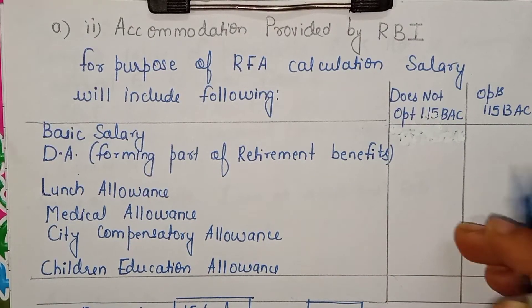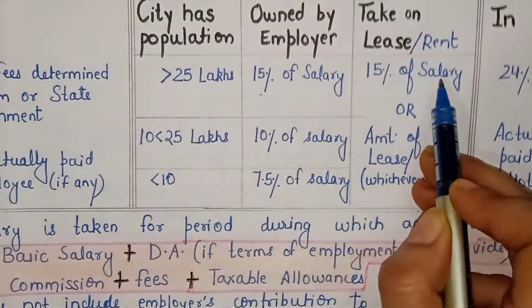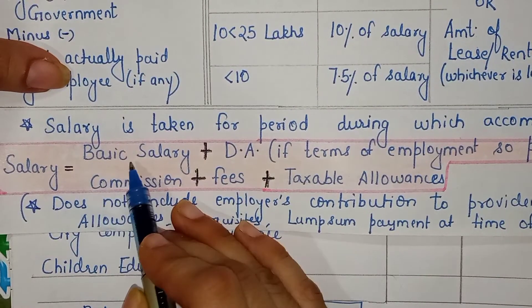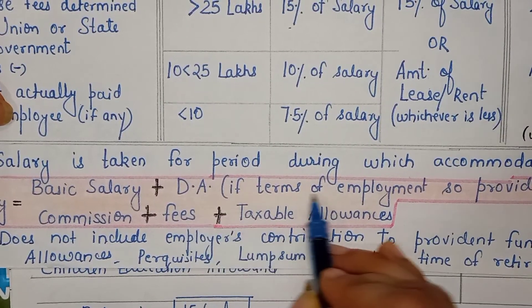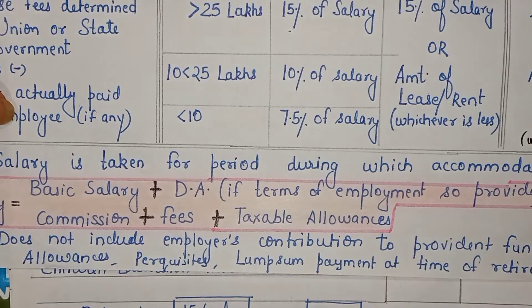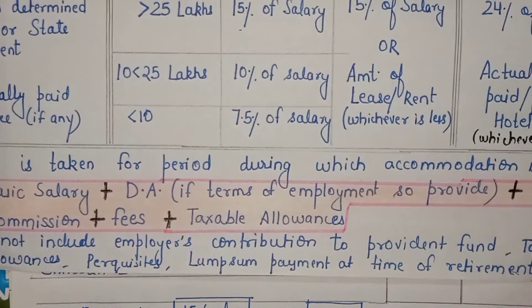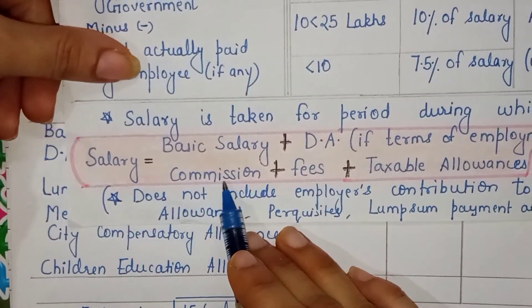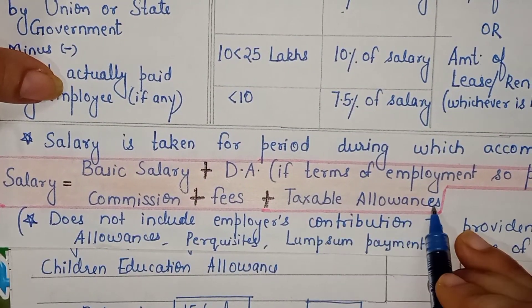For 15% of salary, remember that salary here is not just basic. There are about six ingredients: Number 1 — basic salary. Number 2 — DA which forms part of retirement benefits. Number 3 — bonus. Number 4 — commission. Number 5 — fees. And Number 6 — all taxable allowances. Every taxable allowance is included; whichever allowance is tax-free, or has a partial exemption, only the taxable portion is included in the salary figure.